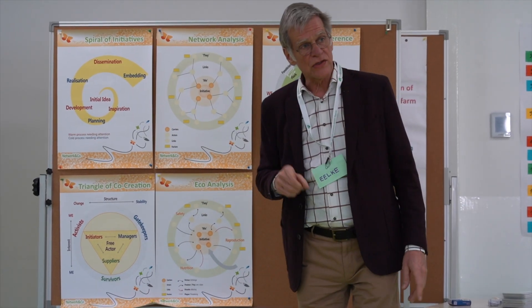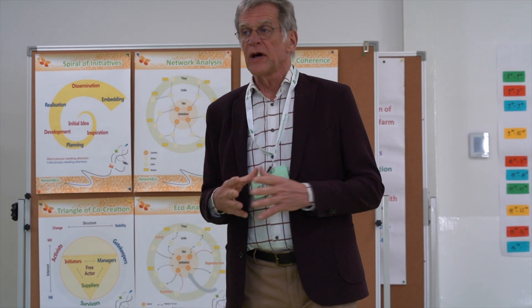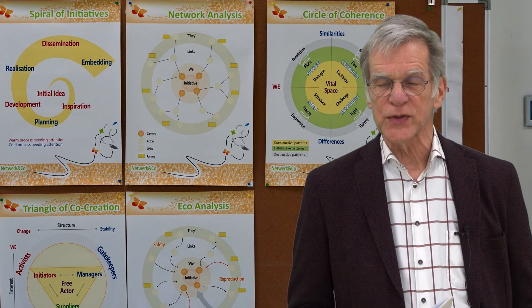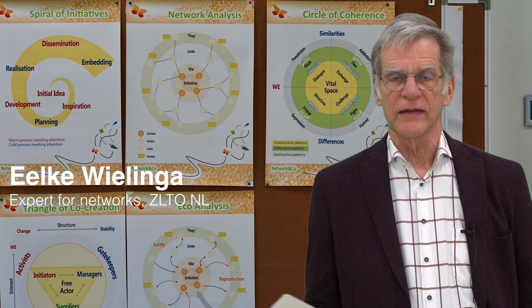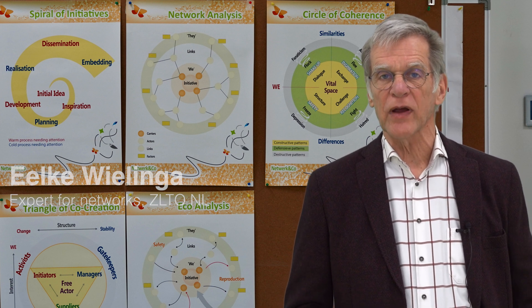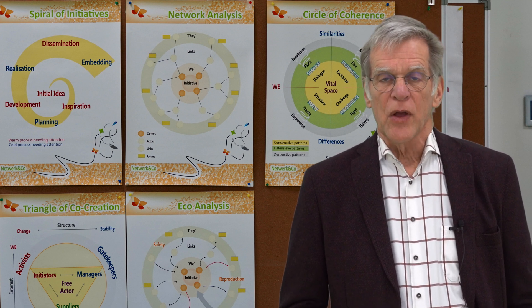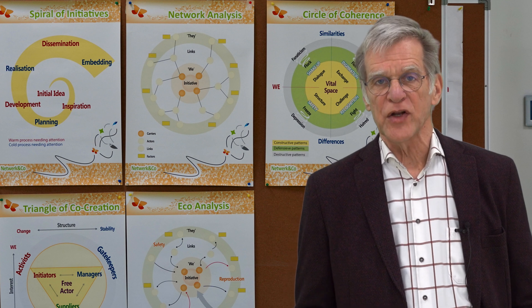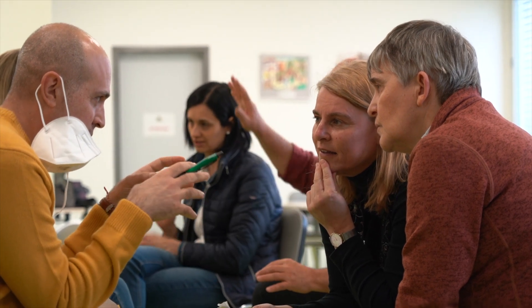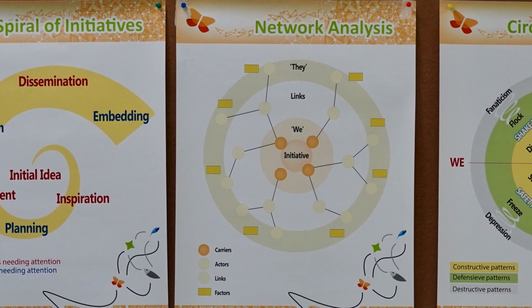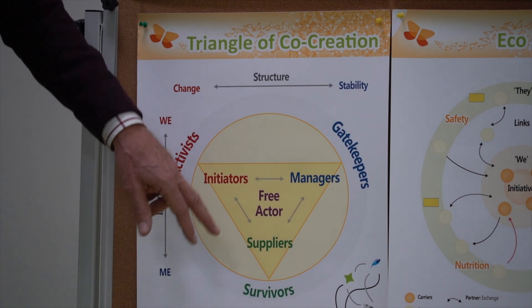These tools for analysis were developed by the Dutch advisor Ilke Willinga. They are diagnostic tools — that means that anywhere you are in the process with an interactive network, you can use them, take time for reflection, and try to see what is happening, where you are in the process, and what could be your next steps. The underlying assumption is that the quality of an innovation is actually depending on the quality of the relationships between the people working on it. These tools have names like the spiral of initiative, the circle of coherence, and the triangle of co-creation.